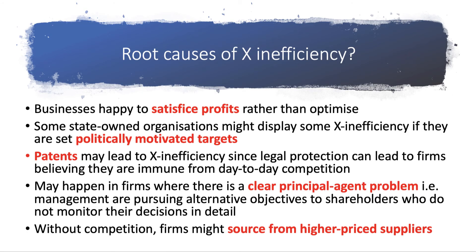What are some of the root causes of waste in a production process? Crucially, businesses may not necessarily be profit maximizing — they may be satisficers, happy to tolerate higher costs and expenses rather than optimize their supply costs. In the state sector, some organizations may display X-inefficiency, particularly if they are set politically motivated targets rather than having commercial objectives at the forefront. Patent protection and legal protection of intellectual property can also lead to some X-inefficiency, because if you have a patent it can lead firms to believe they are immune from day-to-day competition, perhaps for a decade or more.